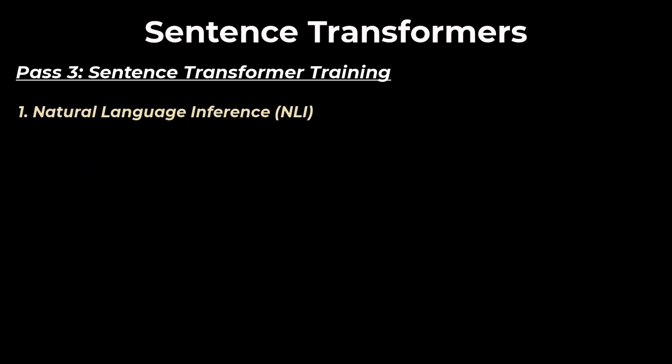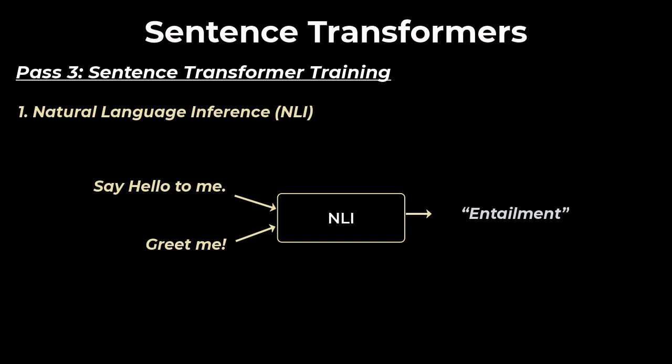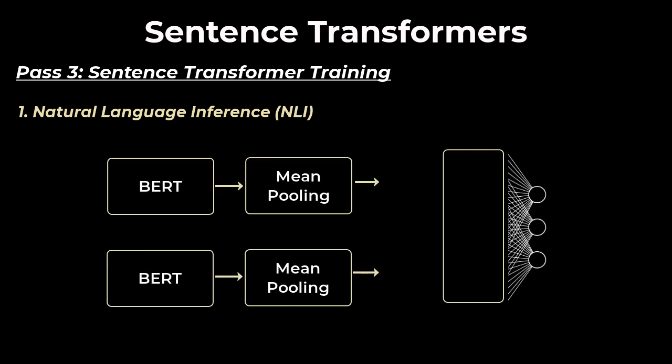Natural language inference is a task that takes in two sentences and determines if sentence 1 entails sentence 2, or sentence 1 contradicts sentence 2, or just neither. This allows BERT to understand sentence meanings as a whole, and is hence chosen for training. For trained natural language inference, we use a Siamese network. Siamese means twins. And so we have two of the exact same sentence transformer networks connected in this fashion.